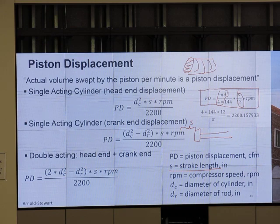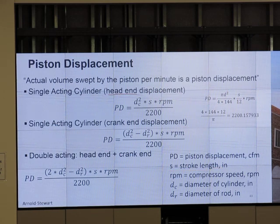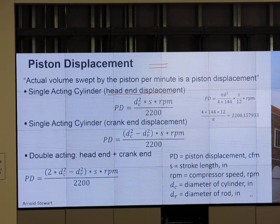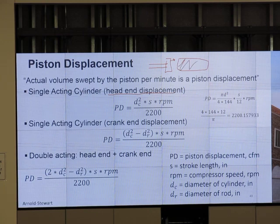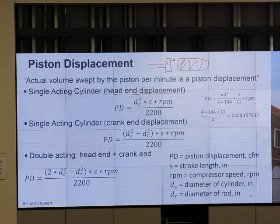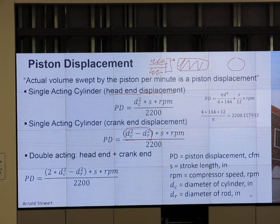This is for the case of head end displacement. I have the piston over there. If I compress this direction, gas in front of it gets compressed. But if I pull it back and do another compression, it will be this area on the back. So this area on the back is dc squared minus dr squared. I have to have the overall area minus the rod area.